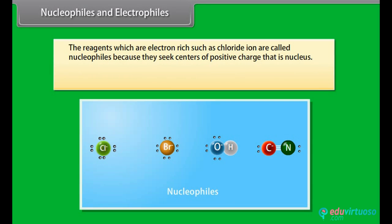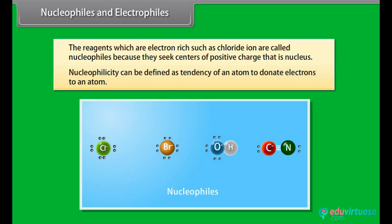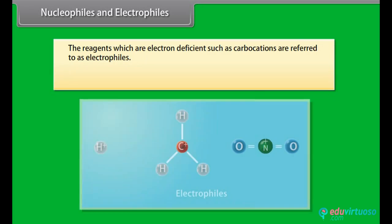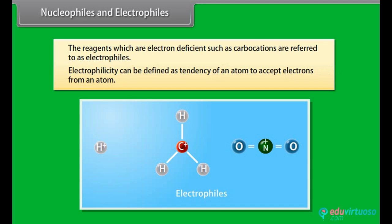Reagents which are electron rich, such as chloride ion, are called nucleophiles because they seek centers of positive charge (the nucleus). Nucleophilicity is defined as the tendency of an atom to donate electrons to another atom. Reagents which are electron deficient, such as carbocations, are referred to as electrophiles. Electrophilicity is defined as the tendency of an atom to accept electrons from another atom.